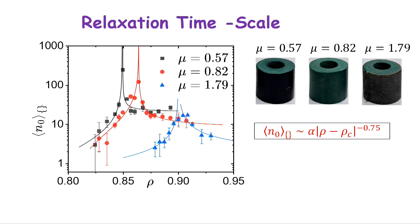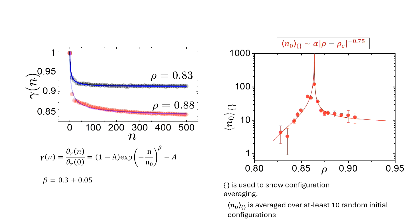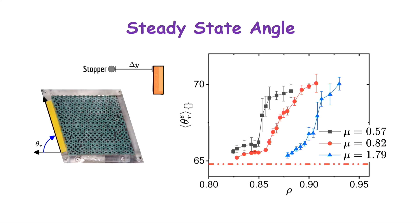Similarly, plotting theta-r as a function of density shows a sharp transition for mu = 0.5, an increasingly unclear transition at 0.82, and at mu = 1.79 there's barely a transition at all. Friction suppresses and shifts the transition - it's a stabilizing factor.